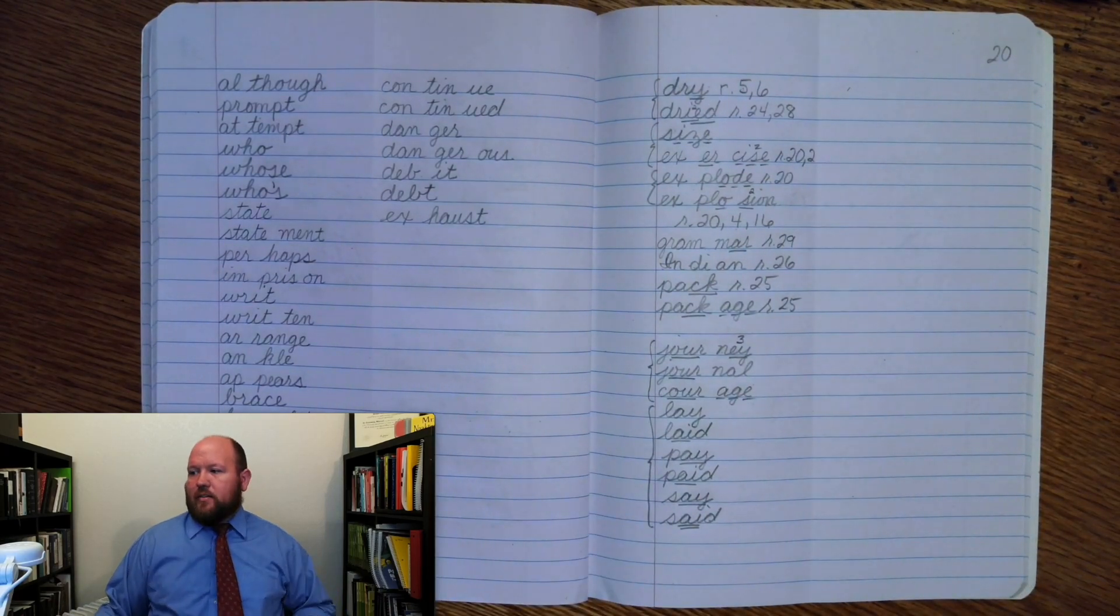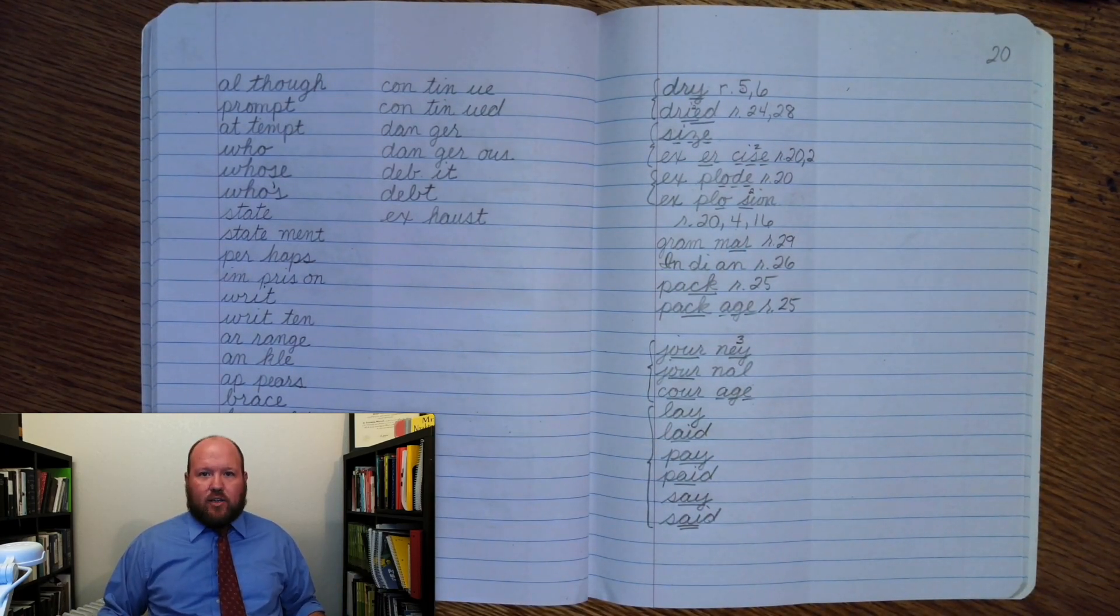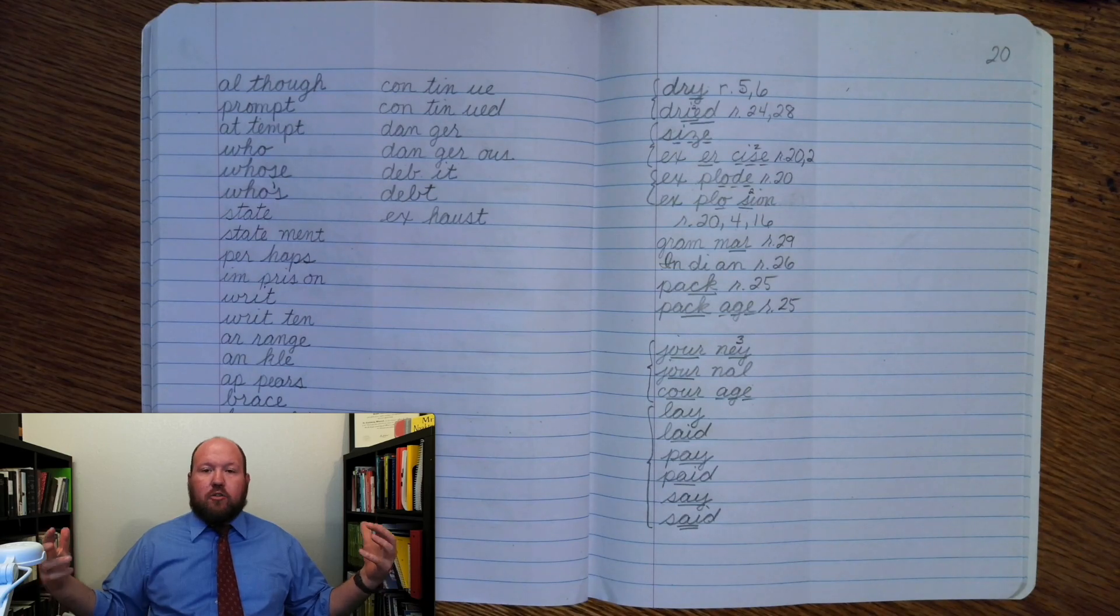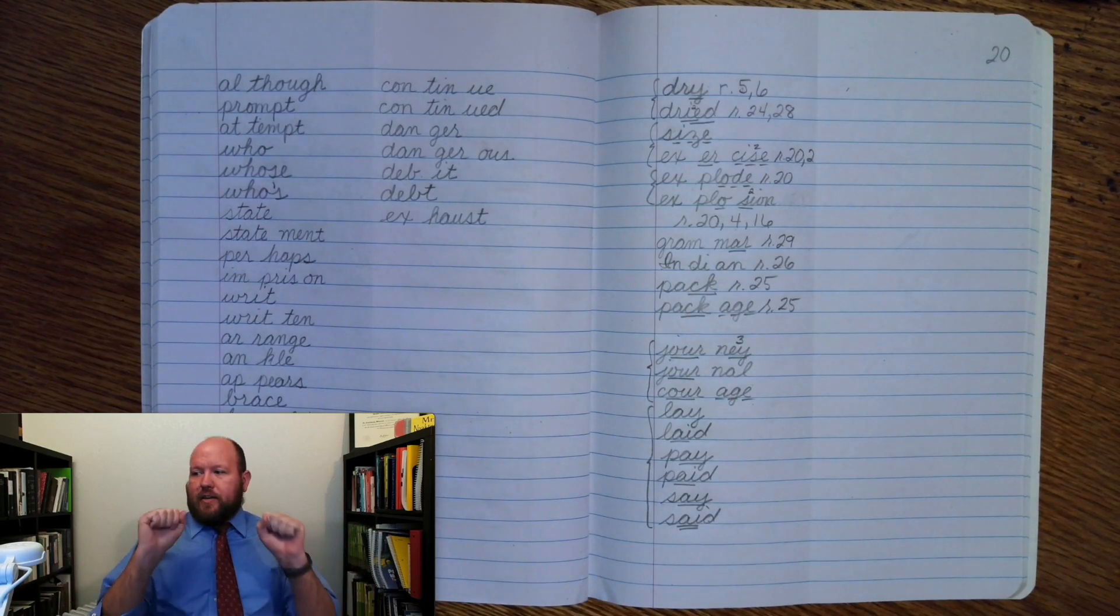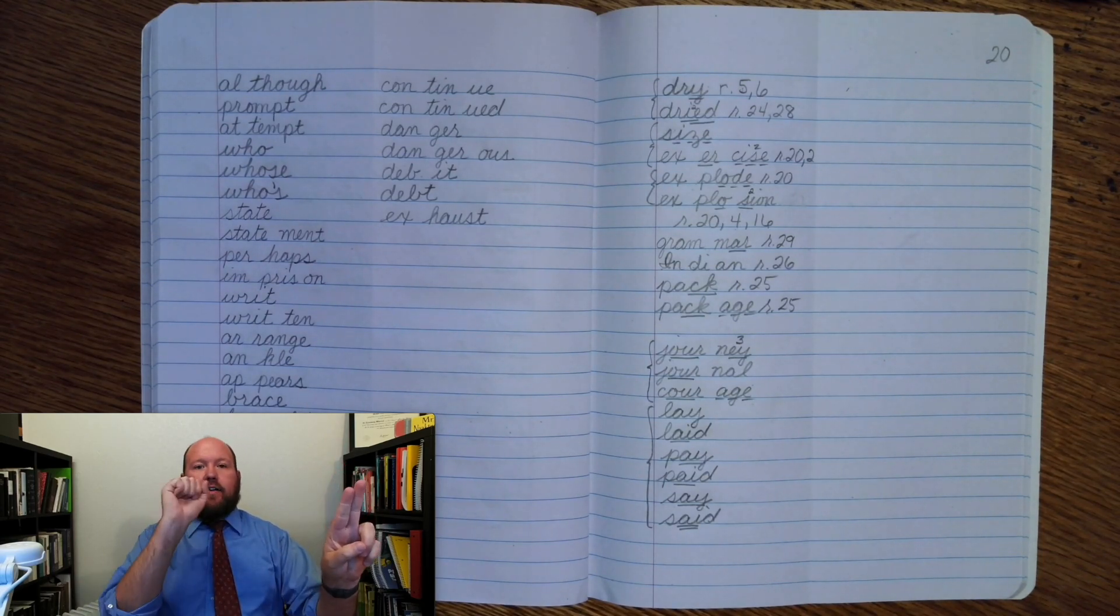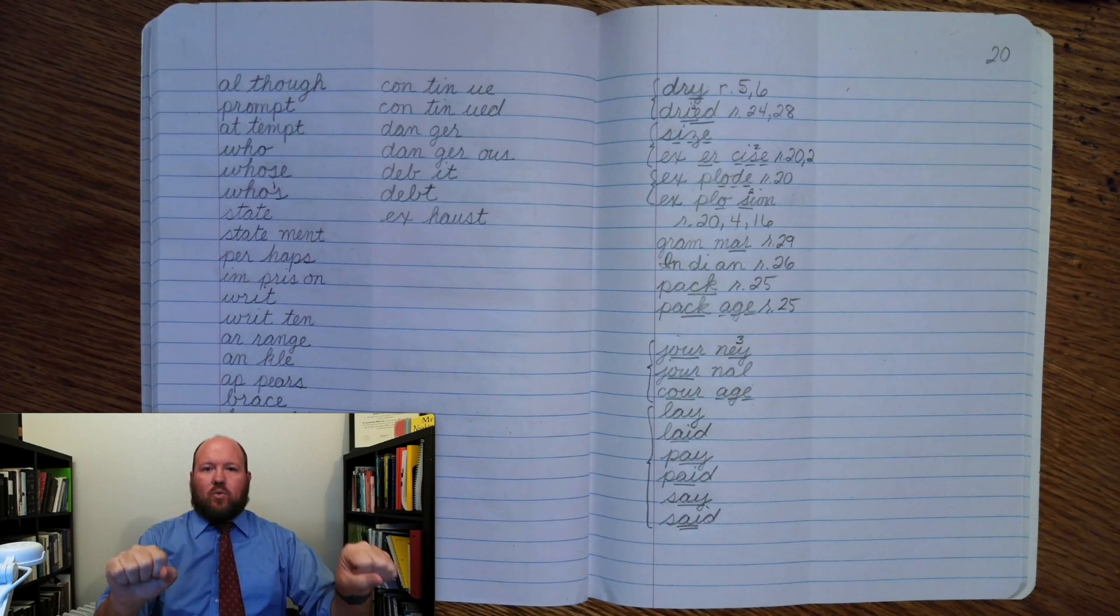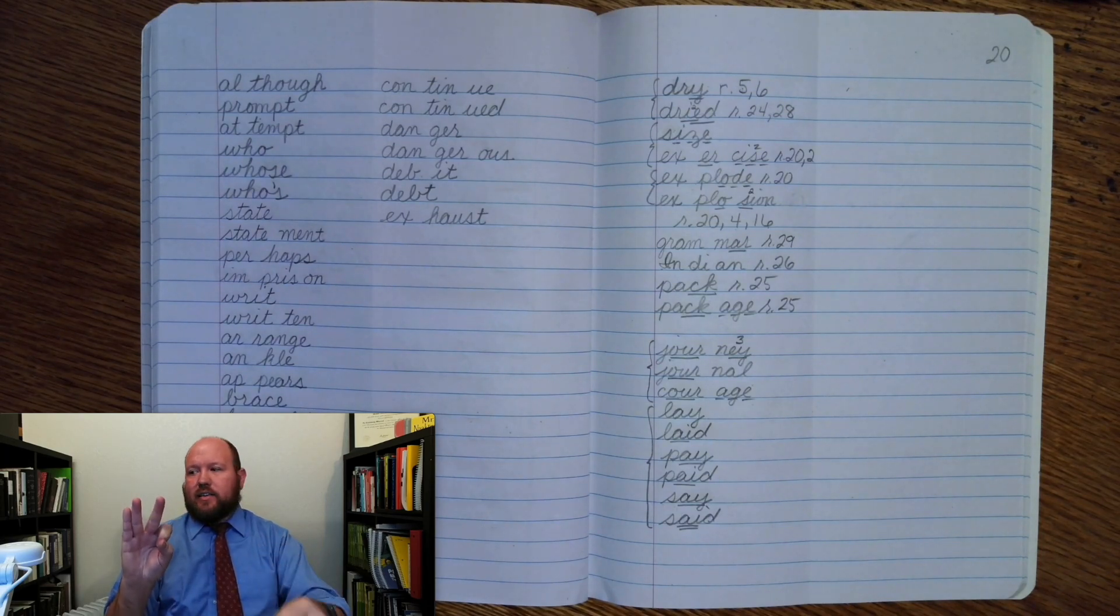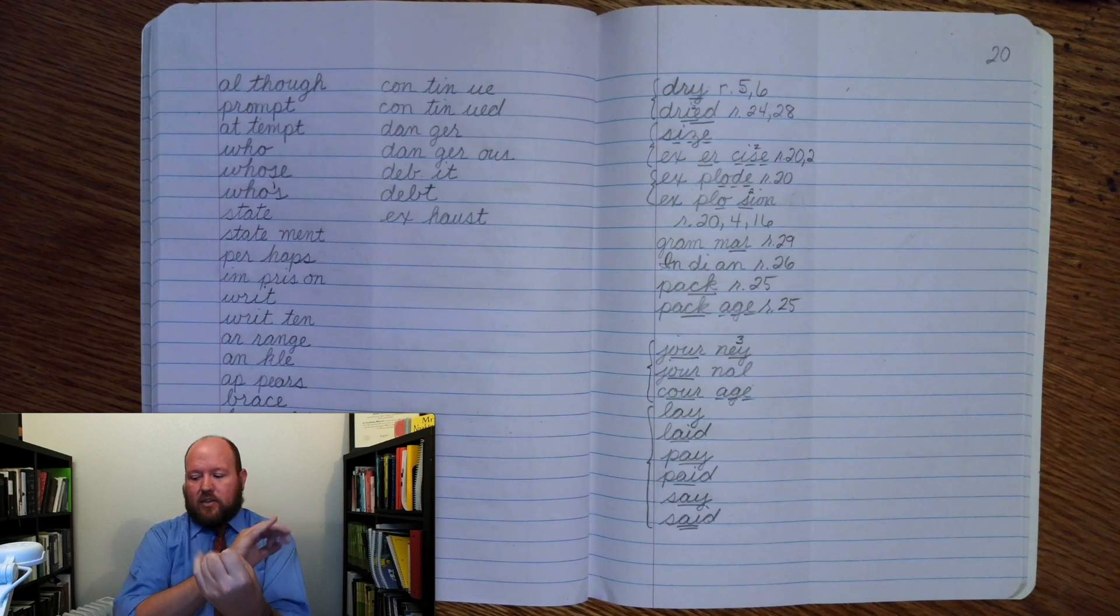And the next word is physical. Now this comes from the base word physic, which has to do with movement. So physical has to do with movement. Physical, base word physic, ending -al. I write physic, add -al to make the word physical. Physical: Phy-zi-cal. Phy-zi-cal. Phy-zi-cal.